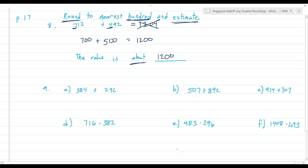So then we have some practice. The instructions are round each number to the nearest hundred and then find the value of the addition or subtraction problem. Thinking in terms of place value, this is 384, which rounds to 400. 296 rounds to 300. So when I estimate this, I say it's about 700.